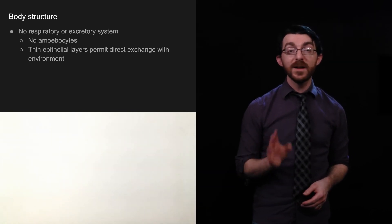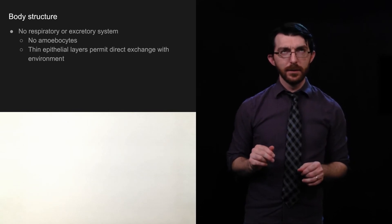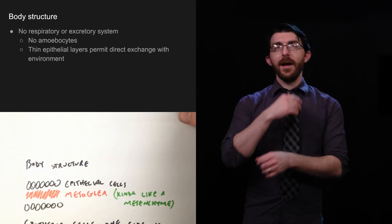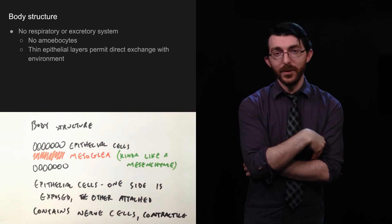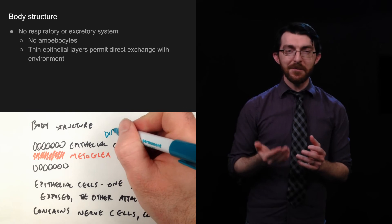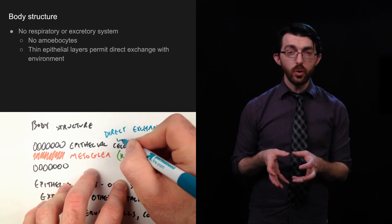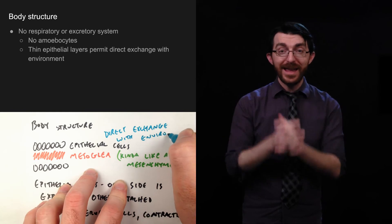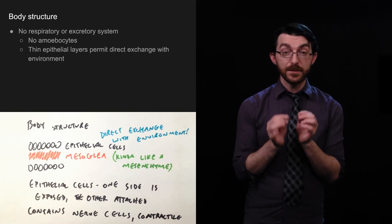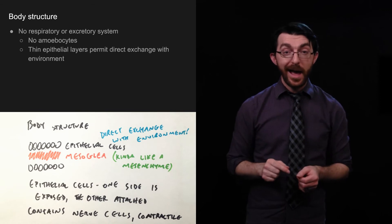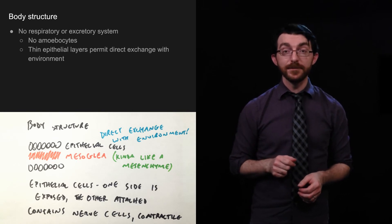They have no respiratory or excretory system. They have no way to breathe. They have no way to poo. Anyway, what that means is when it comes to gases in and out or waste out, it doesn't need a system to deal with that exchange. It's just able to freely dissolve into its environment. The cnidarian has no amoebocytes. Remember, those are those free specialized cells that performed tasks in sponges. And, they also have thin epithelial layers that permit a direct exchange with its environment.